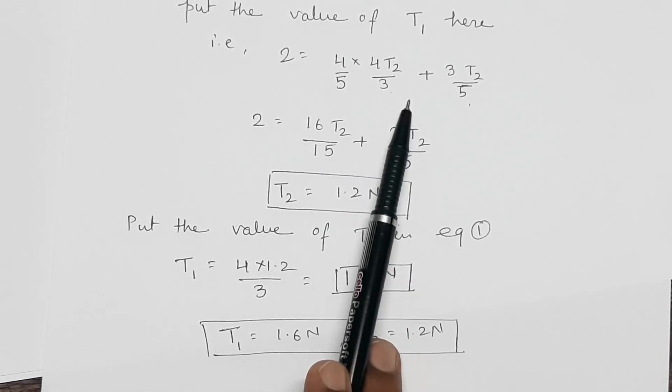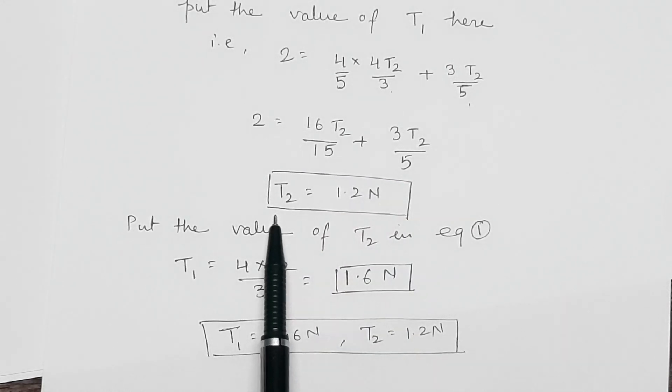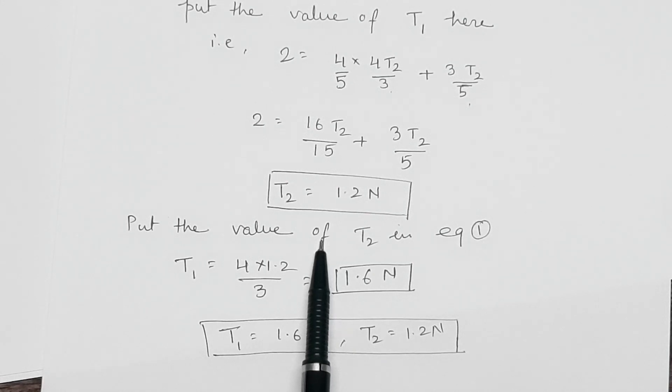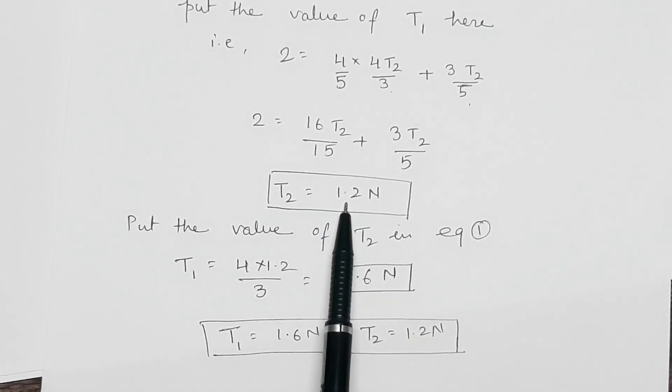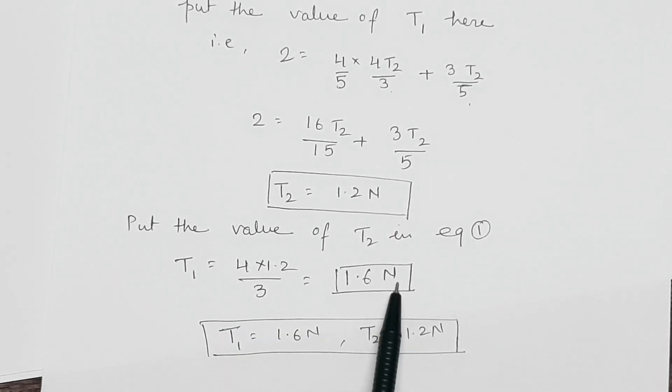After solving this equation we will get the value of T2 that is 1.2 Newton. Now we will put this value of T2 in the previous equation so we will get the value of T1 that will be 1.6 Newton. So the final answer T1 is equal to 1.6 Newton and T2 is equal to 1.2 Newton.